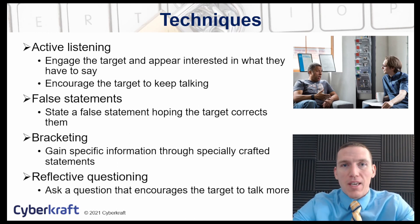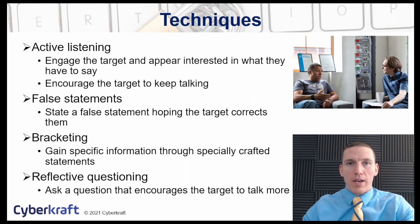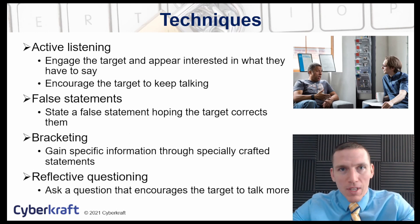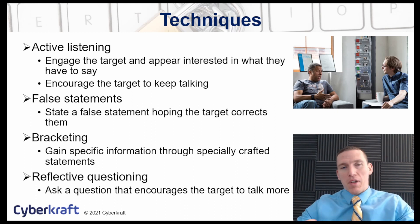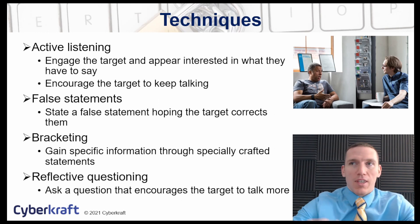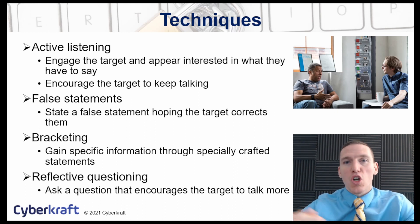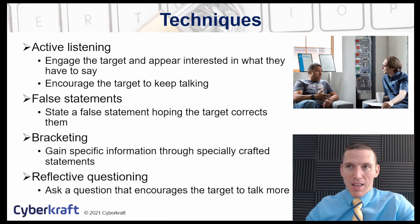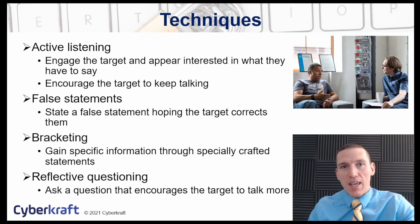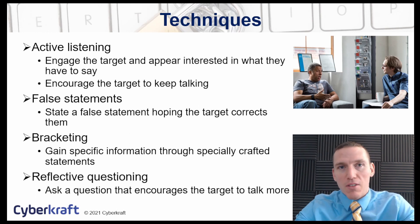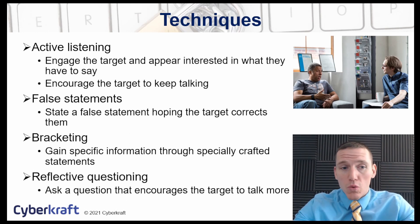One technique is false statements. The attacker might make a false statement — saying, for example, the earth is clearly flat — and then the person on the other end would try to correct them. This works especially well when dealing with an expert who wants to demonstrate their knowledge. It doesn't have to be a blatant false statement; something smaller works too, like saying RAID 10 only provides parity, and the other person would correct you: 'Actually, RAID 10 provides parity, striping, and mirroring.'